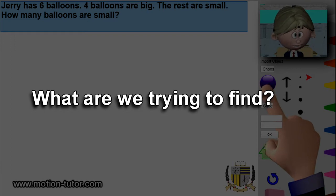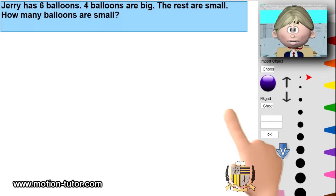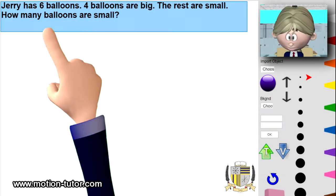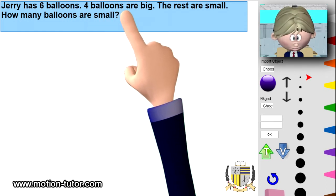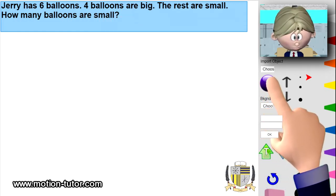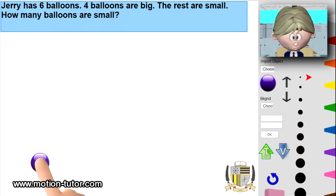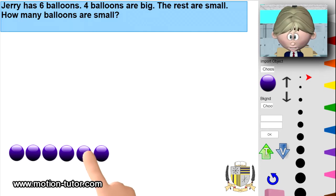Let's think about this. What are we trying to find? We're trying to find how many balloons are small. What information are we given? We are given that Jerry has six balloons and four are big. So we keep that in mind. I'm going to use counters to help me, and I'm going to put them down here because we're going to play a video to further illustrate this. Here are the six balloons that Jerry has — these represent the six balloons.